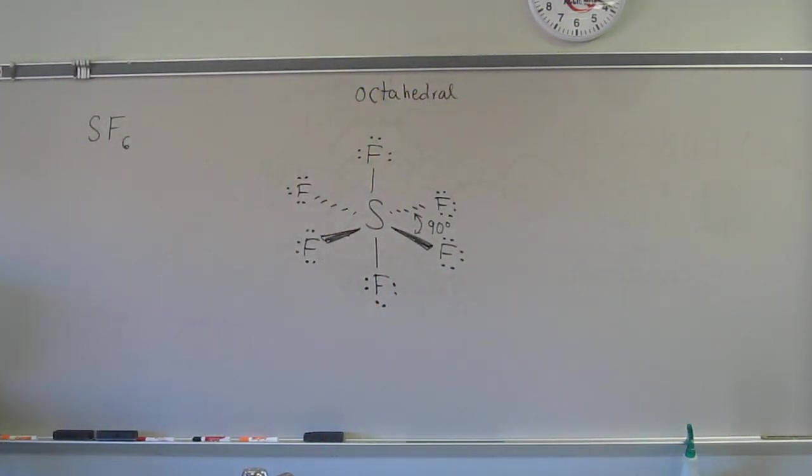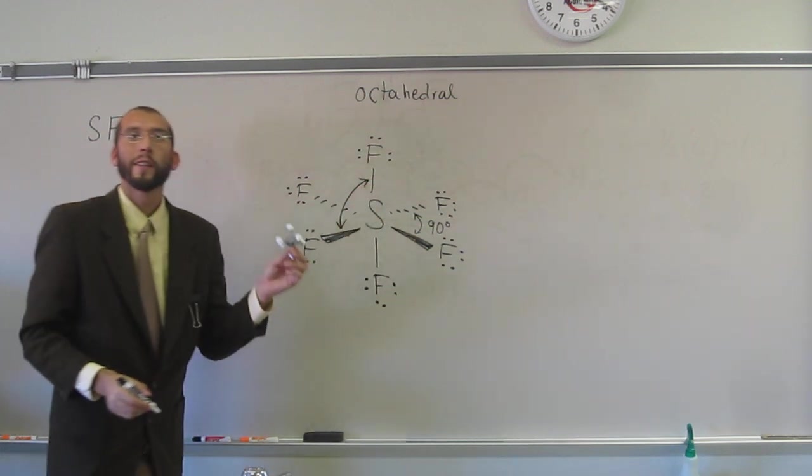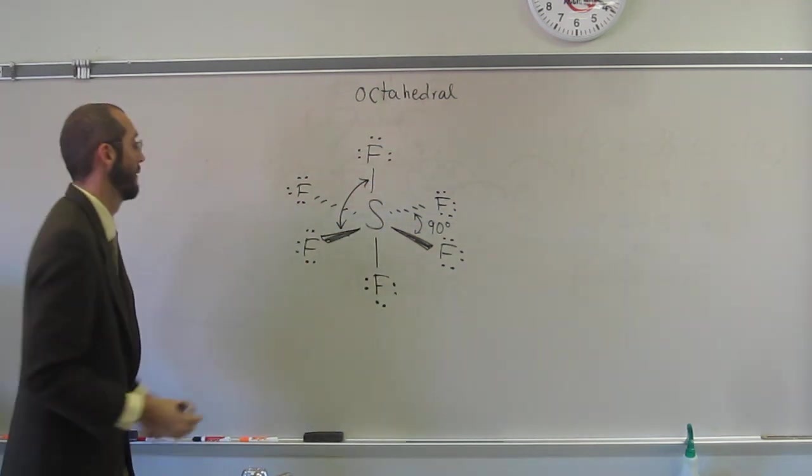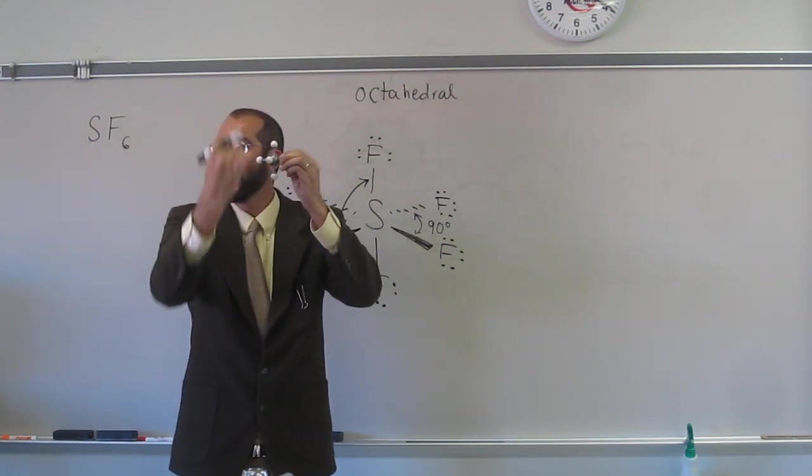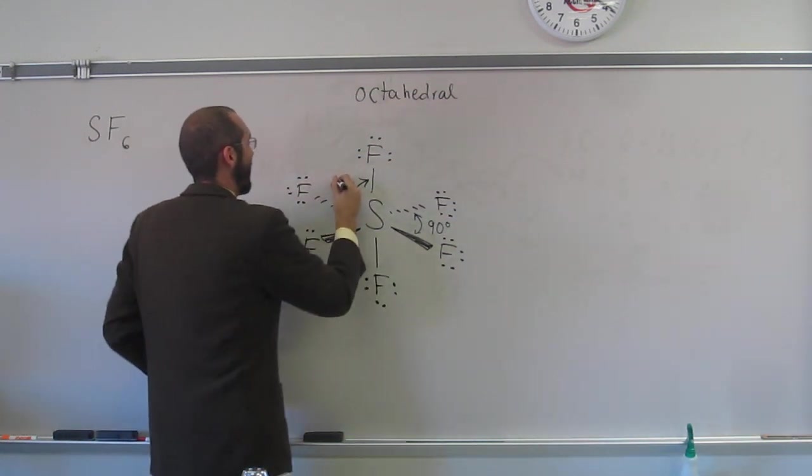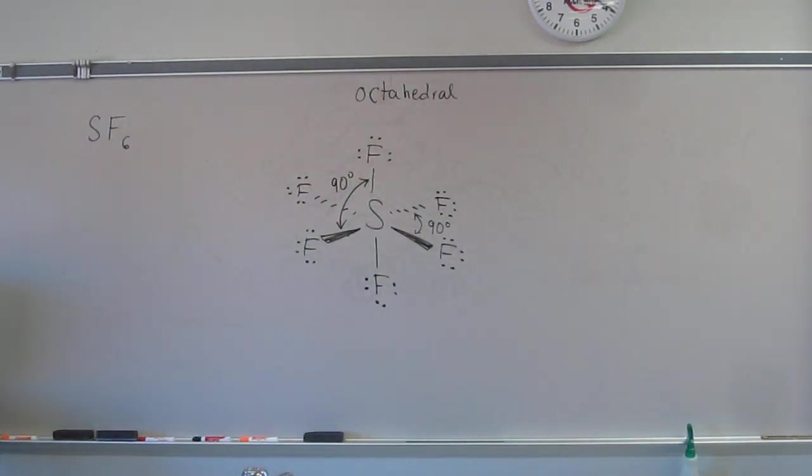So what is the bond angle here, from here to here? What is that? 90. 90 as well? Why? Because there's four on that side too. Was that just a good guess? So is everybody okay with the octahedral geometry?